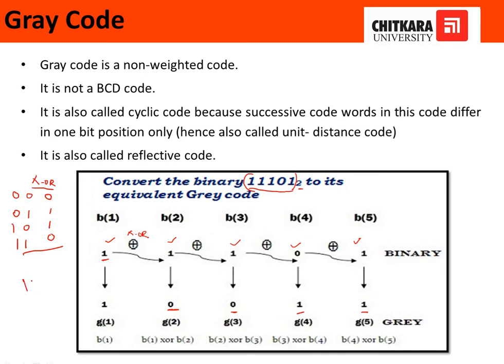We can have another example like this also. Write the first bit as it is. One and zero, see the truth table, gives us 1. Zero and one gives 1 again. One and zero again, write 1. This is the process of how we can convert binary to gray. We just have to recall the XOR truth table, nothing else.